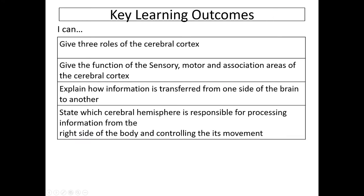In summary, the cerebral cortex is the center of conscious thought. It also recalls memories and alters behaviors in the light of experience. There is some localization of brain function; it contains sensory areas, motor areas, and association areas. Association areas are involved in language processing, personality, imagination, and intelligence. Information from one side of the body is processed in the opposite side of the cerebrum. Transfer of information between the cerebral hemispheres occurs through the corpus callosum. The left cerebral hemisphere deals with information from the right visual field and controls the right side of the body.